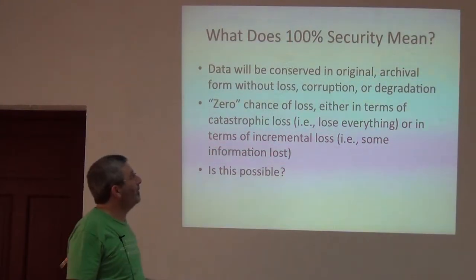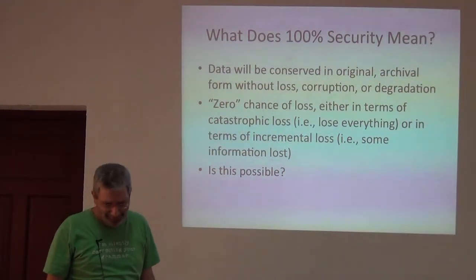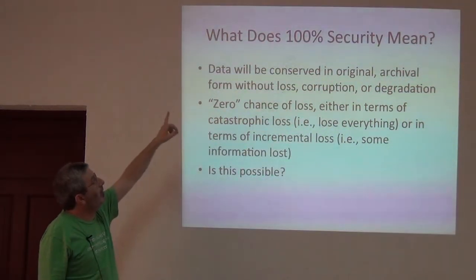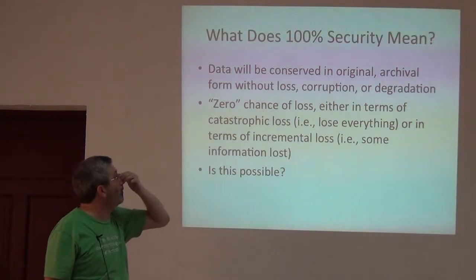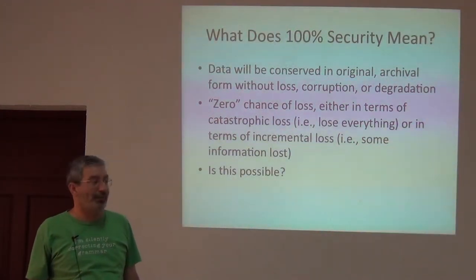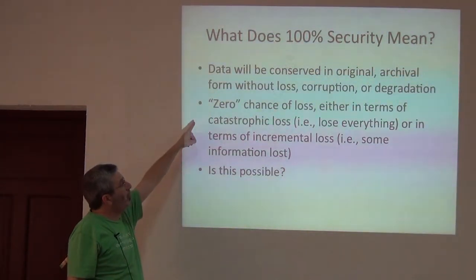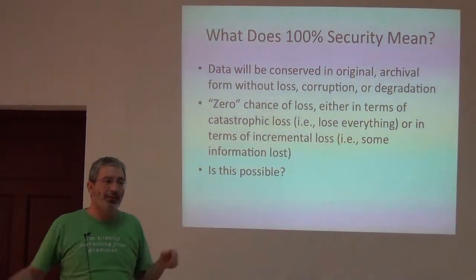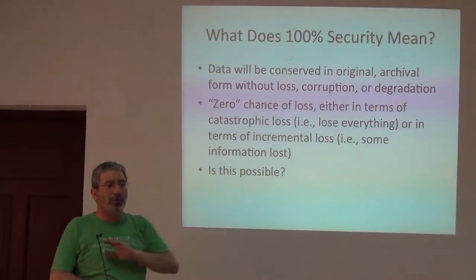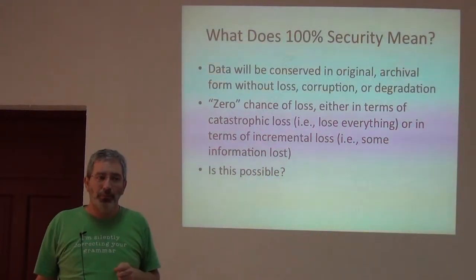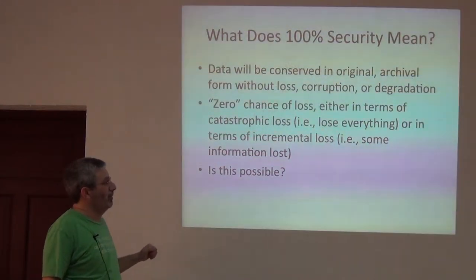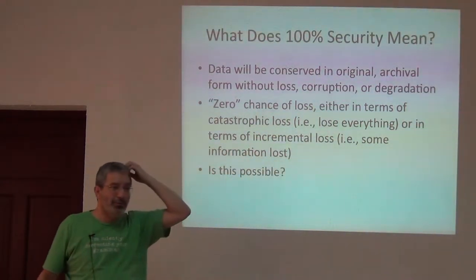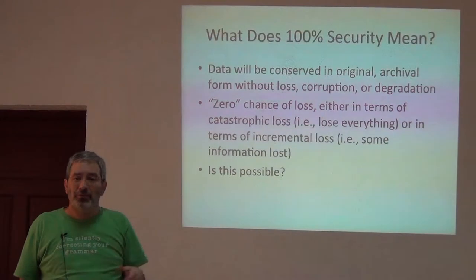So what does 100% data security mean? It means that data will be conserved in the original archival form without loss, corruption, or degradation. To get to zero chance of loss is our goal, and that can take two or many different forms. A catastrophic loss is where you lose everything — the whole thing goes away, the entire data record or the entire collection. Or you can have incremental loss, which is just losing a bit of information here or there.